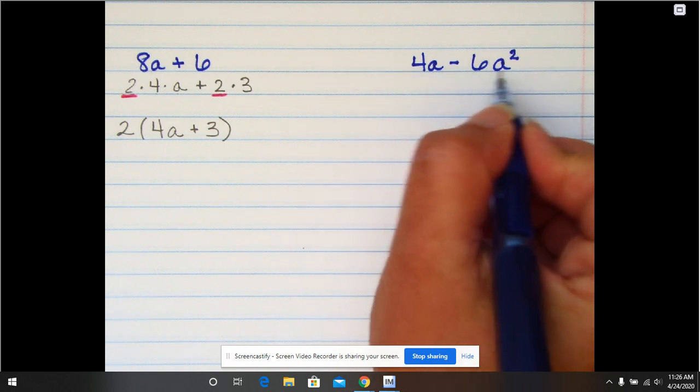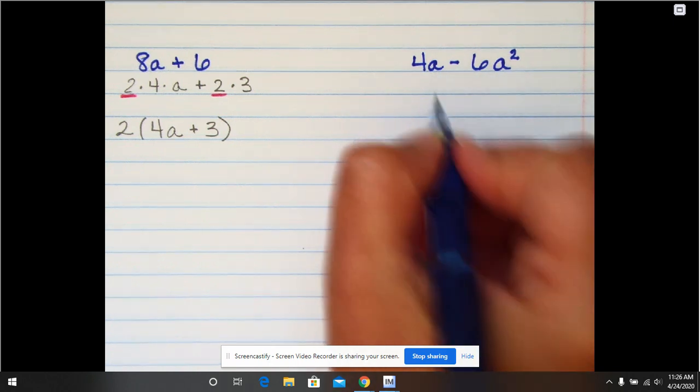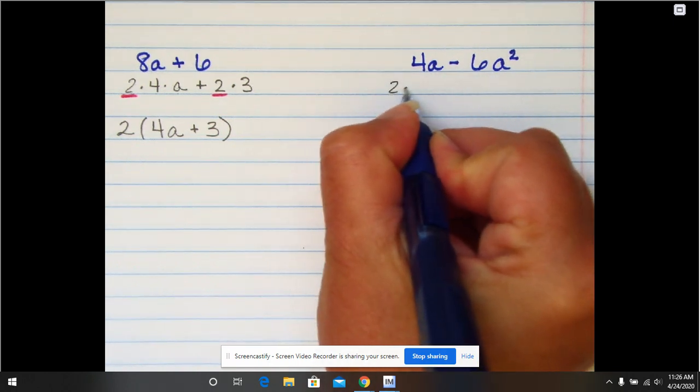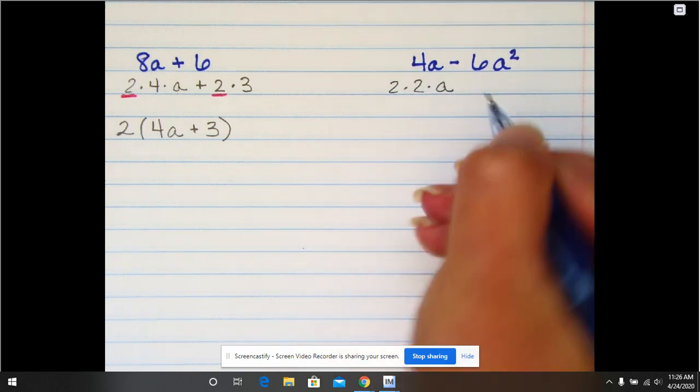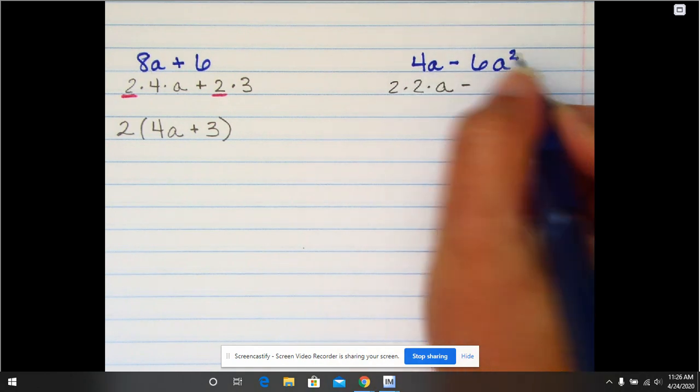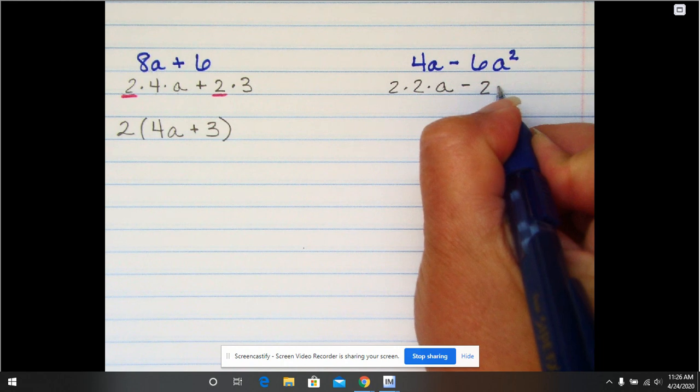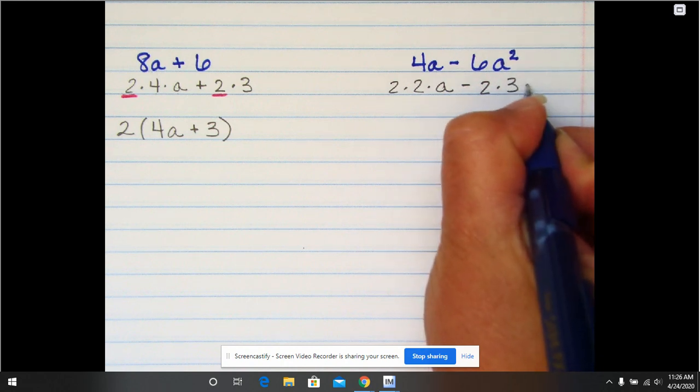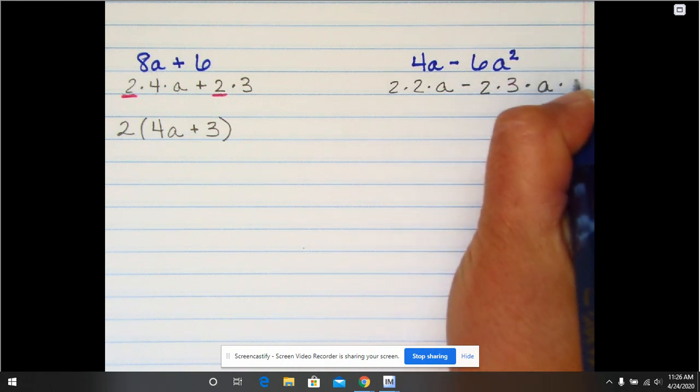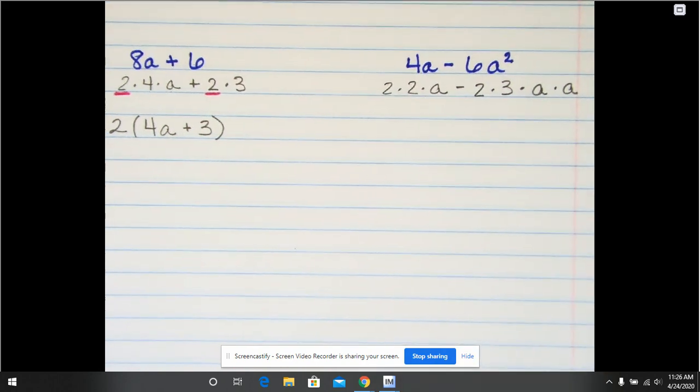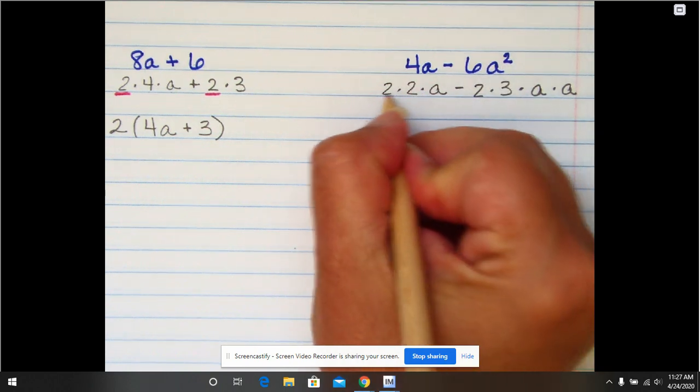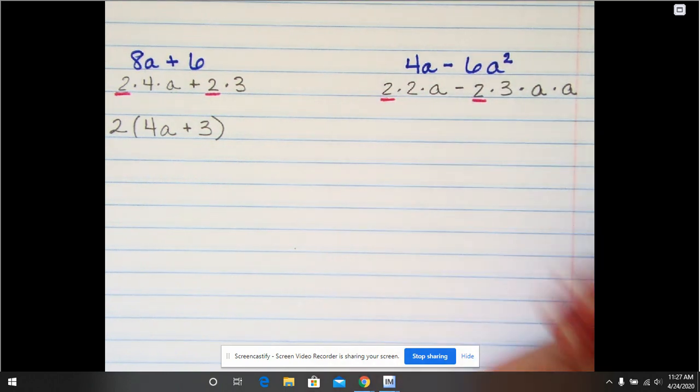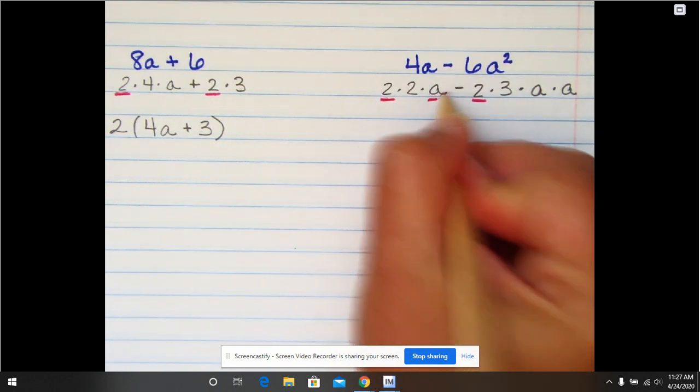In this one I have 2 times 2 times a minus 2 times 3 times a times a. So in this case not only do we have a number in common, the two, but we also have a variable in common.